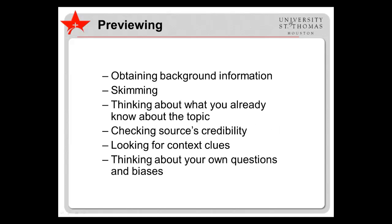Previewing. This involves getting background information on the text and the writer, skimming, and thinking about what you already know about the topic, similar to activating prior learning. Fowler and Aaron suggest checking the facts of publication to gain insight into the credibility of the source, looking for context clues like the title, introduction, headings, and conclusions, reading up on the background of the writer, and thinking about your own questions and even biases regarding the topic.